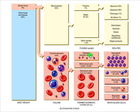The last part of formed elements are platelets. This is why these are called formed elements and not cellular components anymore: platelets are derived from a big cell called a megakaryocyte. The megakaryocyte essentially explodes, and those fragments become platelets. So platelets are not actually cells, which is why we broadly call these formed elements.